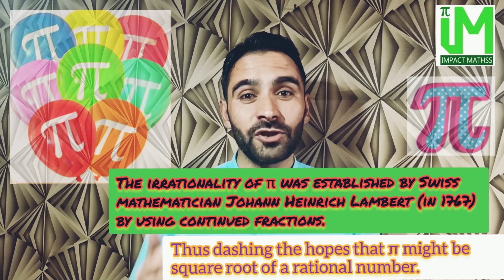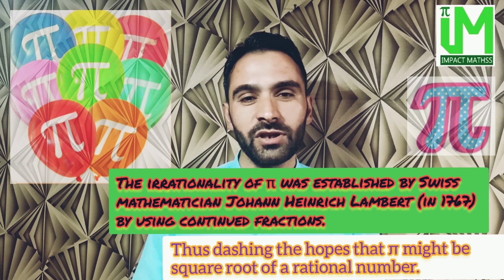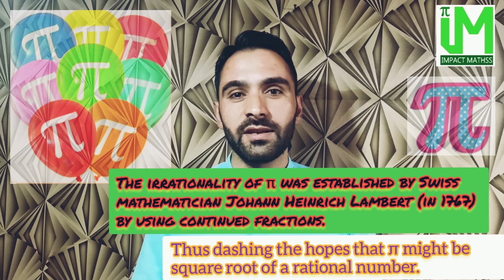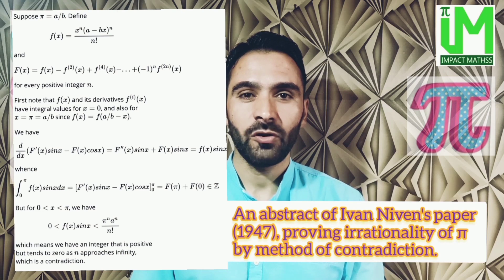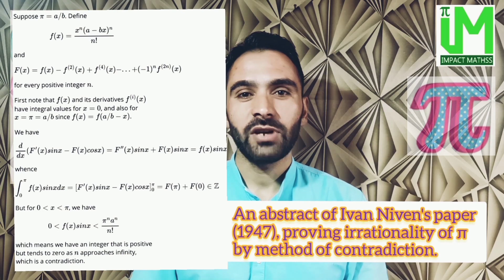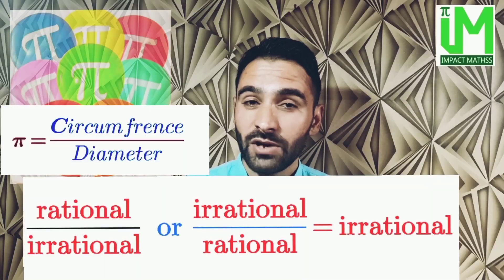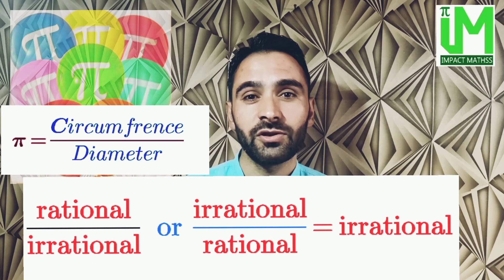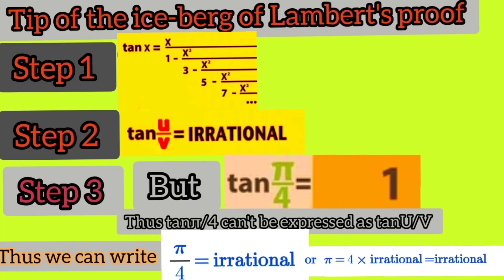From geometrical algorithms and procedures to continued fractions and infinite series, proving the irrationality of pi contains it all. But to explain the irrationality of pi at an elementary level, mathematicians provide the logic that pi is irrational because the ratio of circumference to diameter is irrational, being the ratio of a rational and an irrational number, or the other way around.